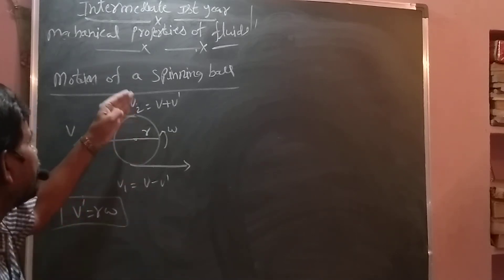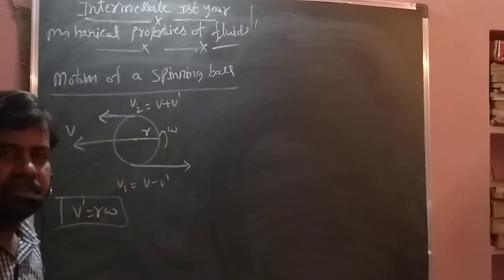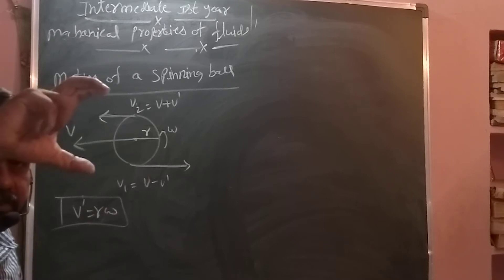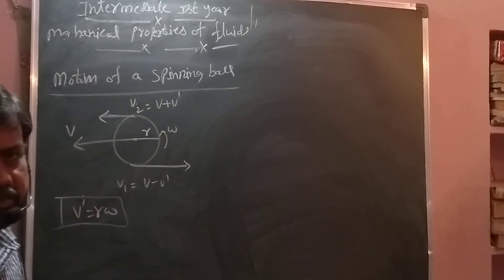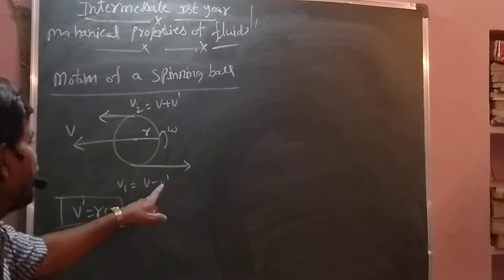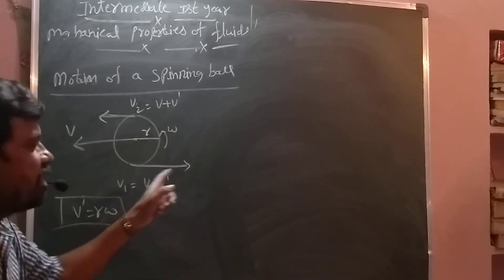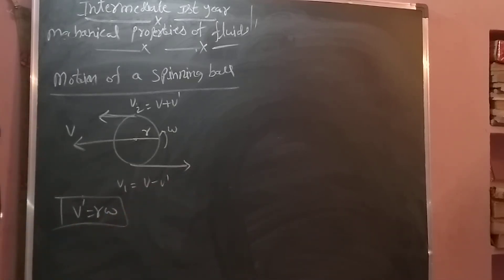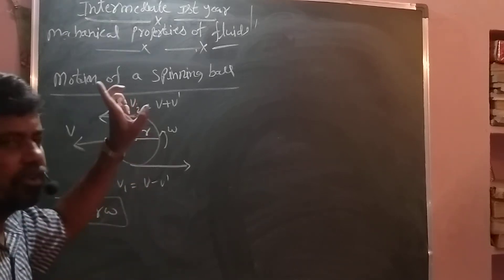Here less velocity, here more velocity. Actually if it goes along straight path without rotation, no problem, same velocity only. But due to this rotation, here V dash velocity changing the top and bottom velocities. Here less velocity, here more velocity.